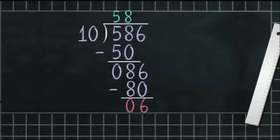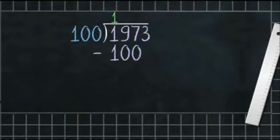A number when divided by 100 gives the number formed by the tens and ones digits as the remainder. Example: 1973 divided by 100. Here we take the first three digits of the dividend, that is 197. We divide 197 by 100 — it goes 1 time, since 100 × 1 = 100.